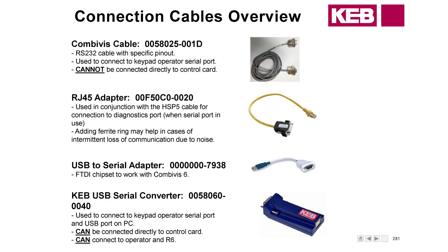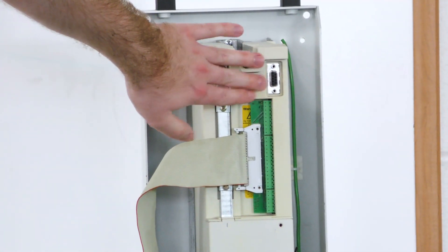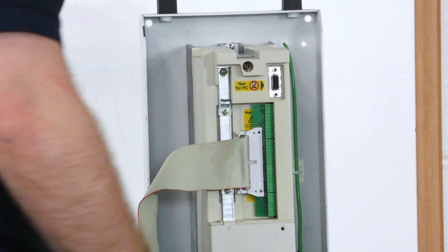To start out, we have a Comdivis cable here — it's an RS-232 cable, but it has a different pinout. Unfortunately you can't go to Best Buy, buy an RS-232 cable, and use that. It has its own pinout. You cannot connect it to the control card. For example, on the R6, you can scope parameters where you would plug in right here, but you can't plug in the Comdivis cable to this port here — you can damage the control card or your computer.